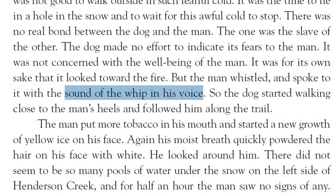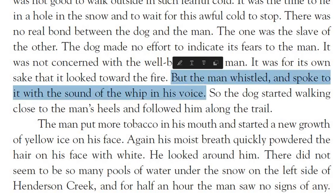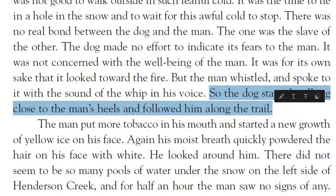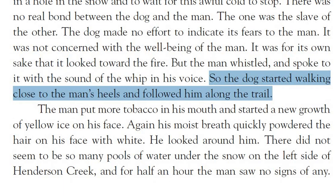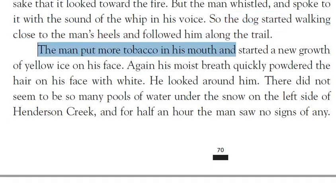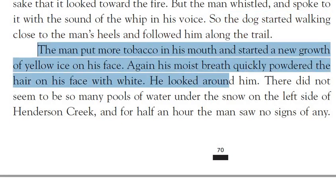With a harsh tone the man spoke to the dog, and the poor creature — being a slave — had to follow orders. So the dog started walking close to the man's heels, unfortunately leaving the comfort of the fire. The man put more tobacco in his mouth and started a new growth of yellow ice on his face — at minus 75 degrees the tobacco juice would spit and freeze, creating yellow-colored ice around his face.